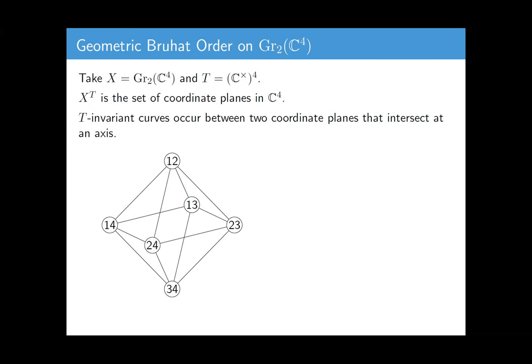If I have two planes that intersect along a coordinate axis, then in that three-dimensional subspace of C⁴, I have one degree of freedom to rotate one plane on top of the other. In Grassmannian Gr(2,4), that looks like an invariant curve. It's a one-dimensional orbit whose closure contains those two fixed points. For example, take this fixed curve between the fixed point 1-2 and 2-3. This fixed curve is a copy of P1, so it really looks like the Riemann sphere. When the torus acts on this sub-variety, it really looks like rotating the sphere by multiplying by some character.